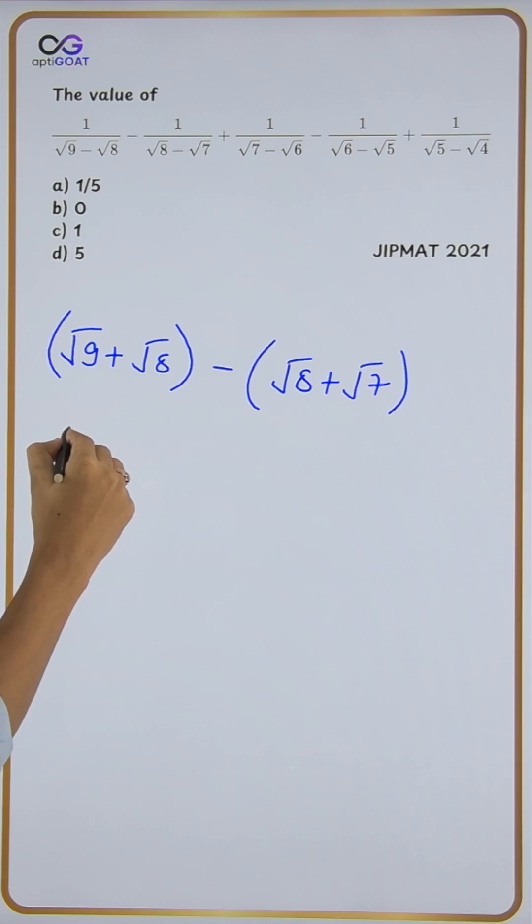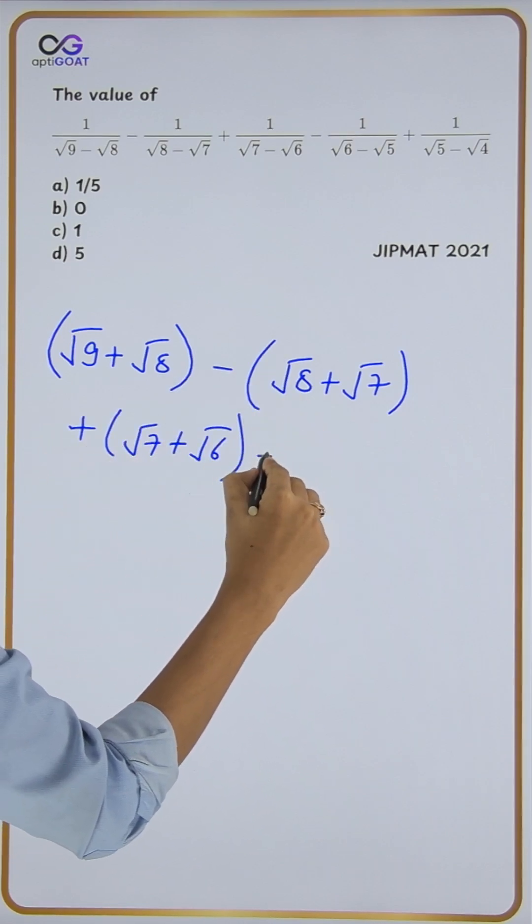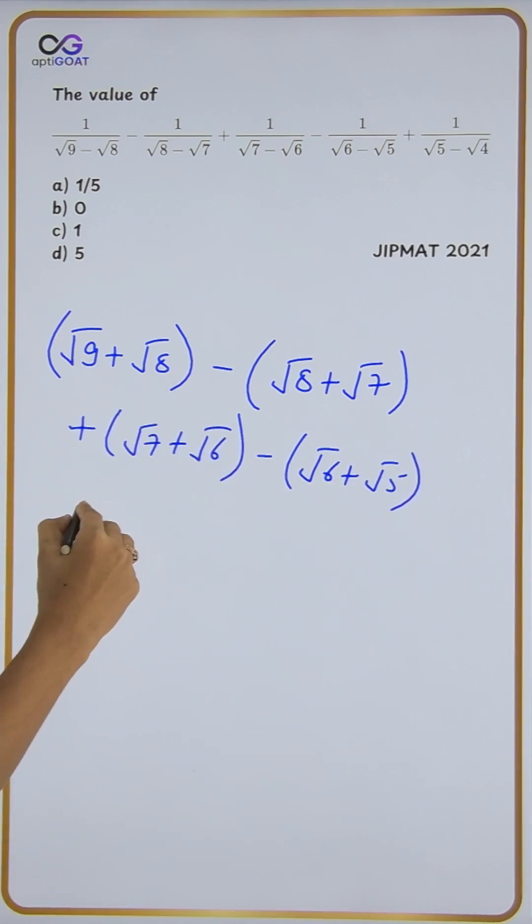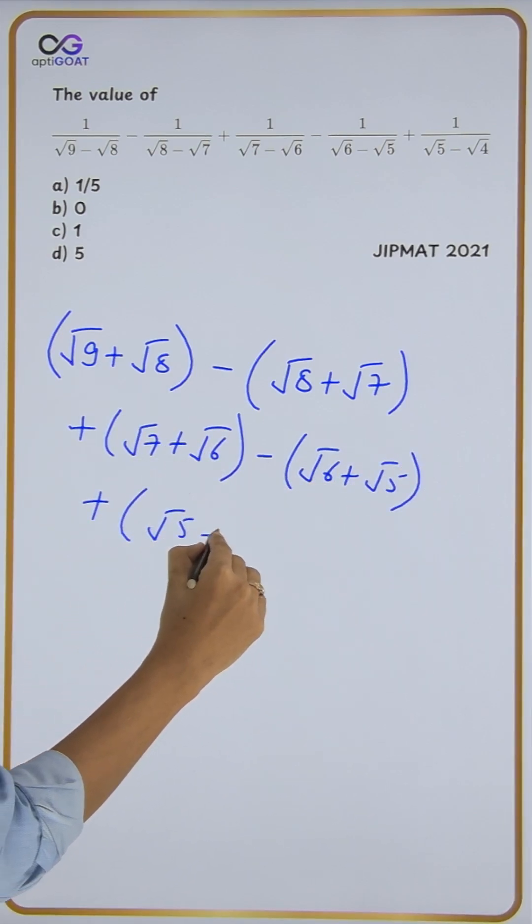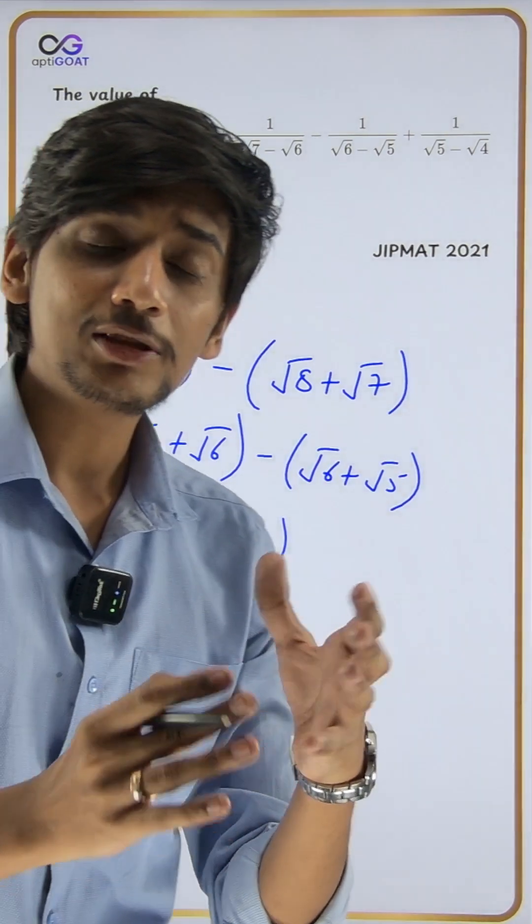The next term is minus root 6 plus root 5. Then plus root 5 plus root 4. When we multiply and open the brackets, terms will cancel - this will cancel, this will cancel, this will cancel.